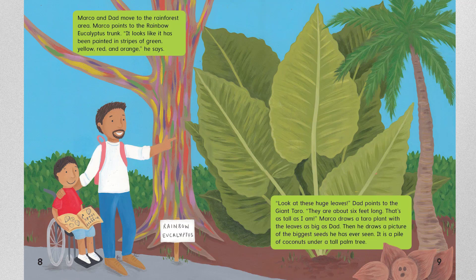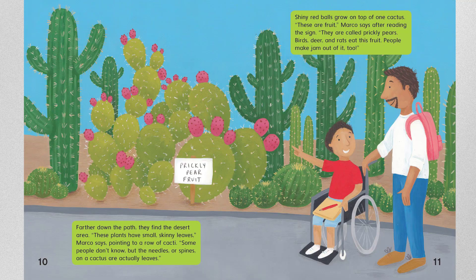Marco and Dad move to the rainforest area. Marco points to the rainbow eucalyptus trunk. "It looks like it has been painted in stripes of green, yellow, red, and orange," he says. "Look at these huge leaves," Dad points to the giant taro. "They're about six feet long — that's as tall as I am." Marco draws a taro plant with the leaves as big as Dad, then draws a picture of the biggest seed he has ever seen: a pile of coconuts under a tall palm tree.